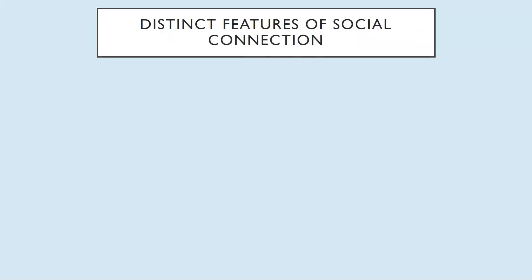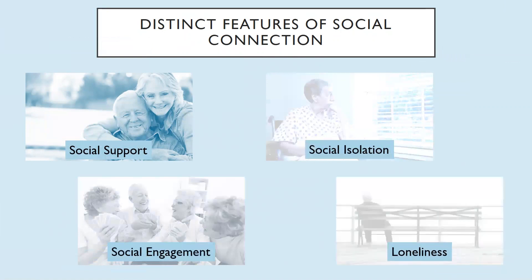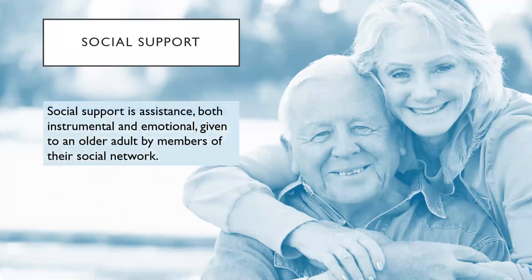When it comes to understanding social relationships and the ways that influence healthy aging, social scientists have studied several distinct features of social connection offered by relationships. These include social support, social engagement, social isolation, and loneliness. Social support is assistance, both instrumental and emotional, given to an older adult by members of their social network. These members include intimate partners and spouses, children and grandchildren, friends and neighbors. Social support matters for healthy aging because it is associated with better ability to complete daily living activities. Maintaining the ability to complete daily living activities is especially important because an inability to complete such activities constitutes a shift from the normal cognitive decline associated with aging to the more detrimental functional decline associated with dementia.